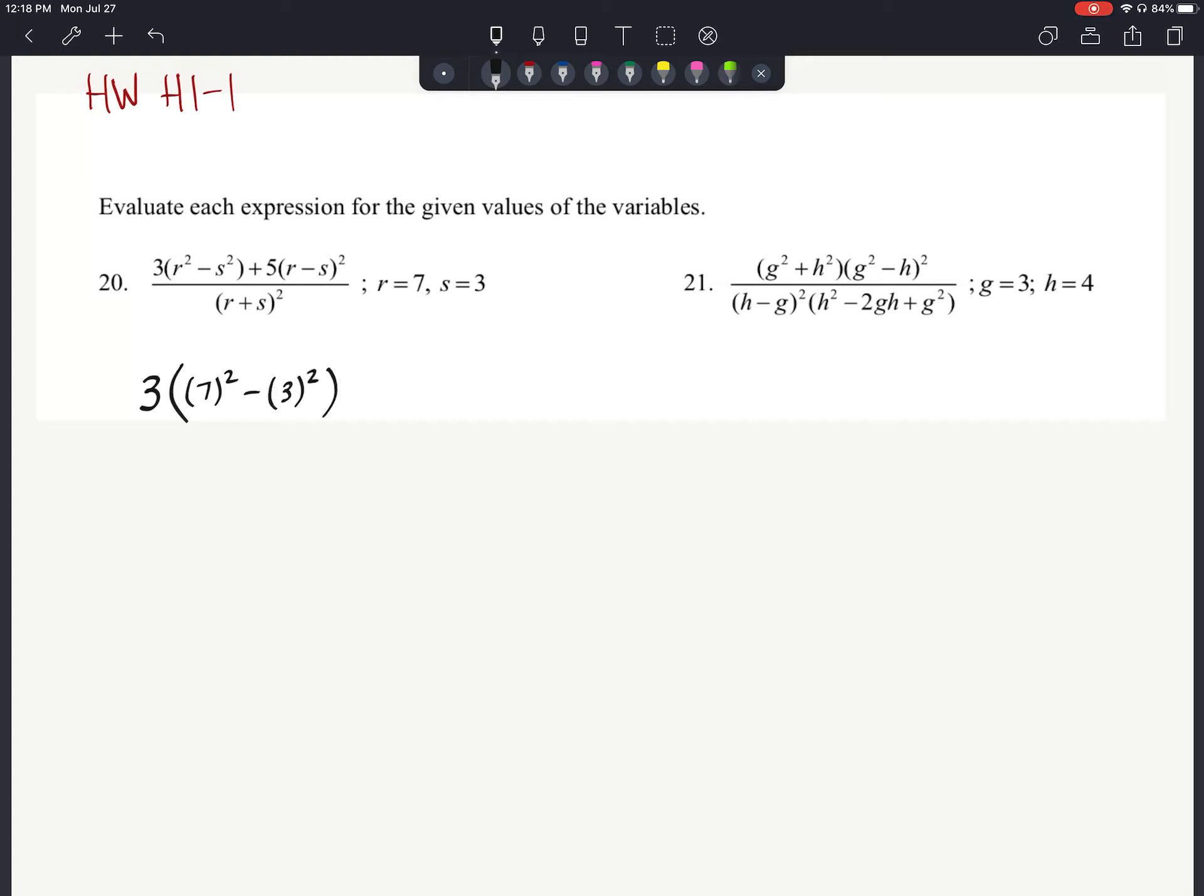So we've got a 7 squared minus a 3 squared. So we've got here 7 squared is 49, 3 squared is 9. So we have 49 minus 9 inside of there, plus 5 times the quantity of 7 minus 3 is 4. And that right now is over 7 plus 3 would be 10, so we have 10 squared on the bottom.